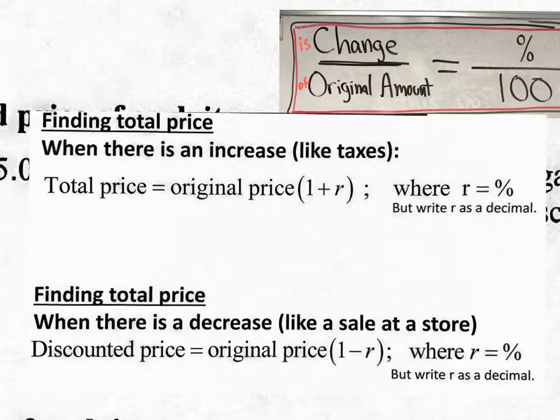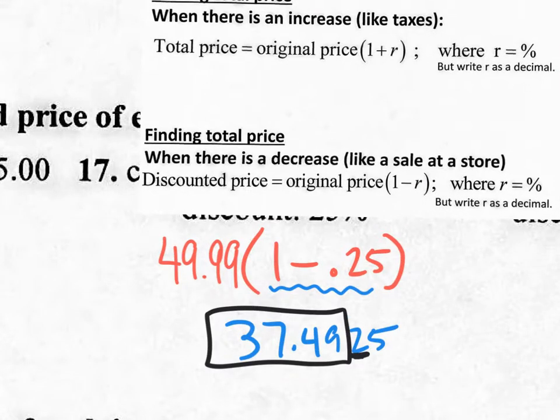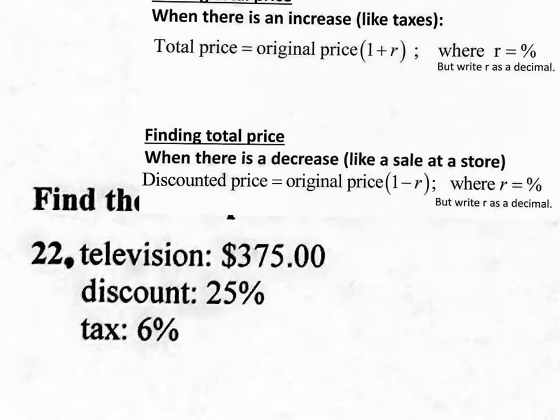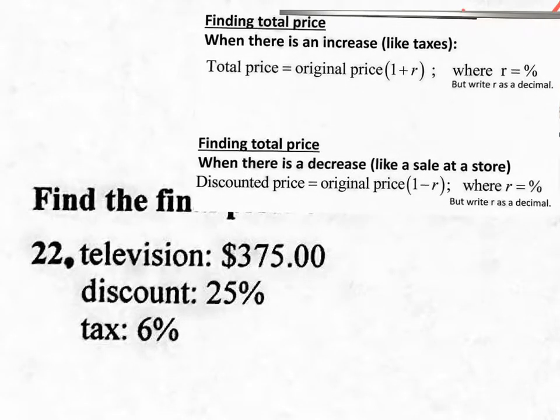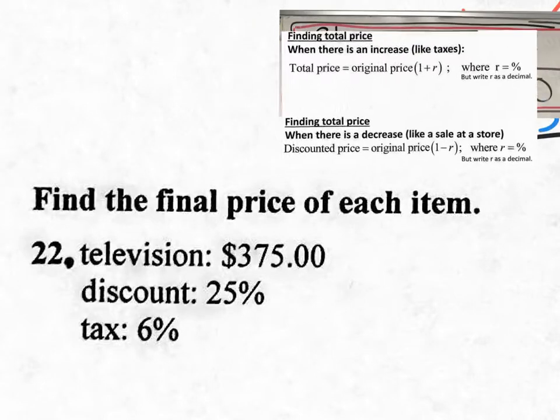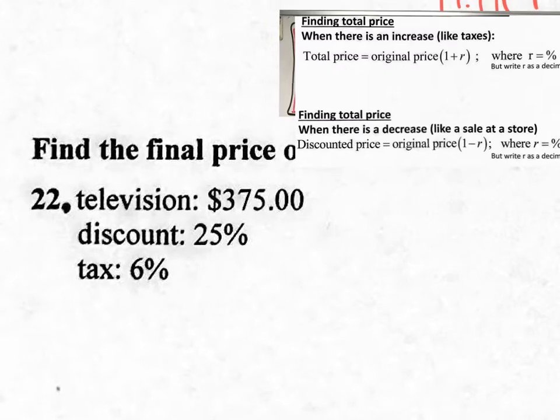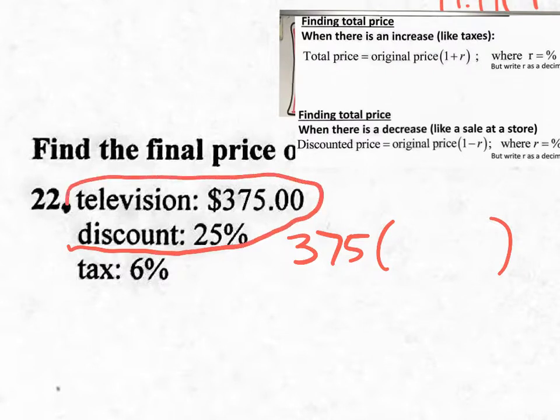If it's a decrease, original price times 1 minus the rate, which is a percent, but you got to change it to a decimal. So the only thing we could do now is go for the hardest type of question, something like 22 right here. On 22, there's both increases and decreases going on, right? So the original amount is $375.